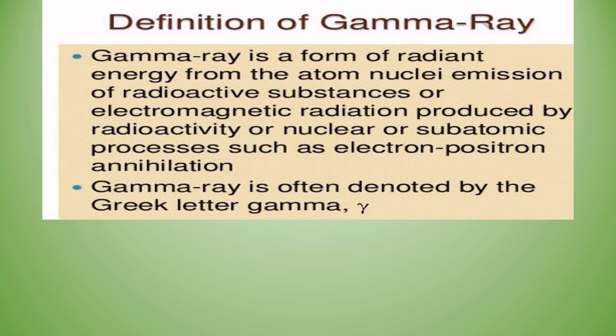Now let us see about gamma rays. A gamma ray is a form of radiant energy from atomic nuclei — electromagnetic radiation produced by radioactivity or nuclear and subatomic processes such as electron-positron annihilation. Gamma ray is often denoted by the Greek letter gamma. When massive stars explode, they release a tremendous amount of energy in a gamma ray burst.